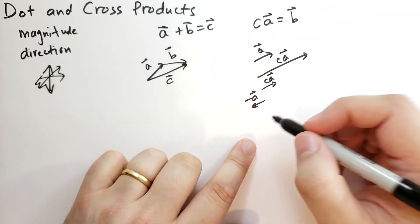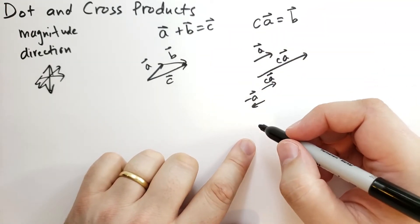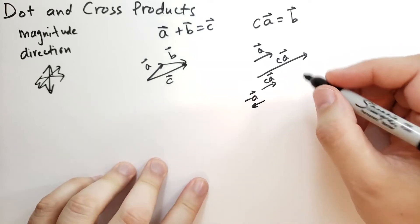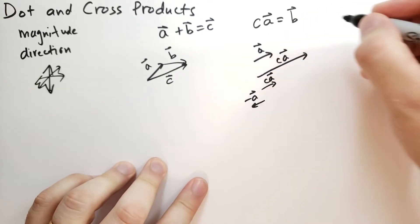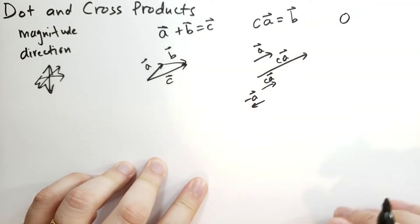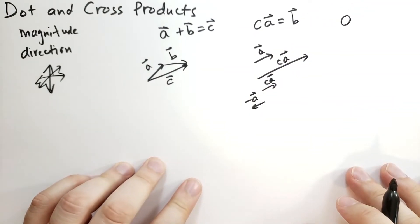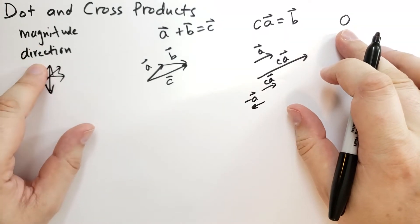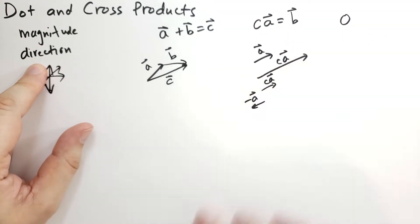That's what multiplying by a scalar does to a vector. Of course, if you multiply by 0, you'll get the zero vector, which we just write as 0. The zero vector has no magnitude and the direction is irrelevant.